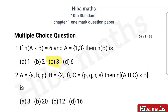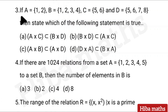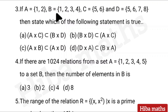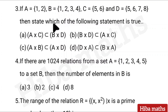Answer: option C. Third question: If A is equal to {1, 2}, B is equal to {1, 2, 3, 4}, C is equal to {5, 6}, and D is equal to {5, 6, 7, 8}, then state which of the following statements is true.